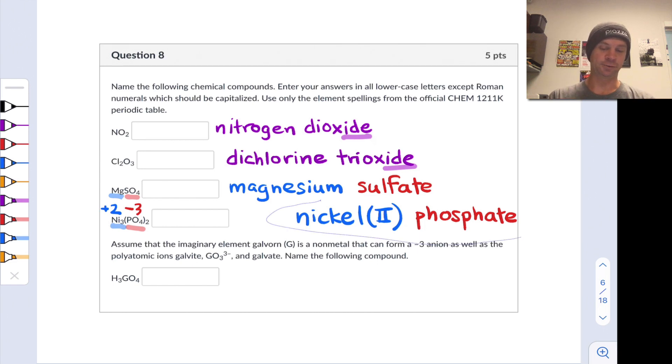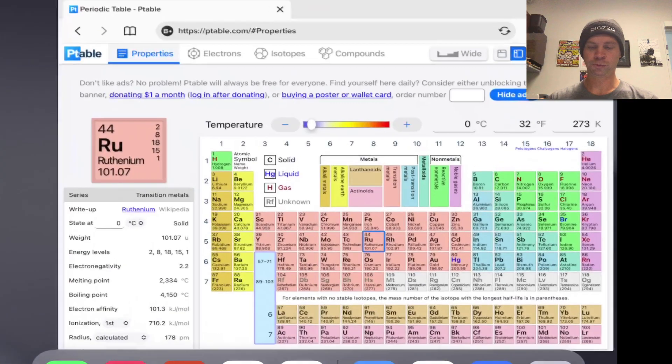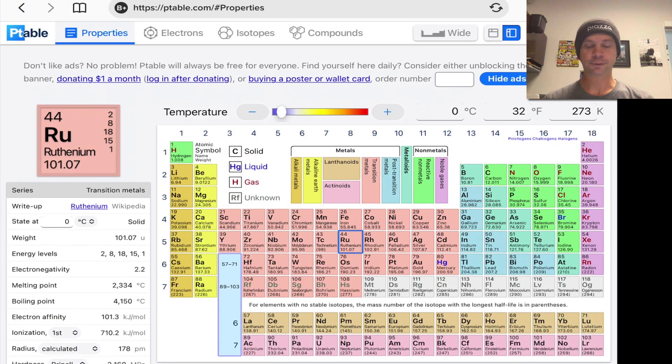Now the last example here is really interesting. We're given a hypothetical element, the hypothetical element Galvorn with the symbol G. Hard to believe that's not actually used by an actual element, but there is no element G. So we're going to make one up for the purposes of this problem and call it Galvorn. Galvorn is a non-metal that can form a negative three anion.